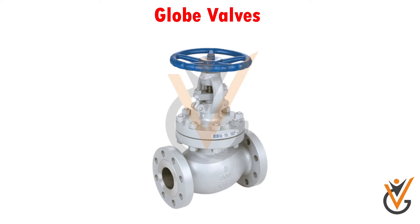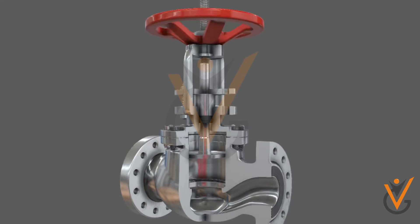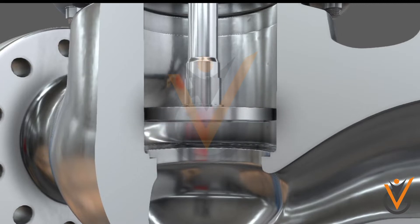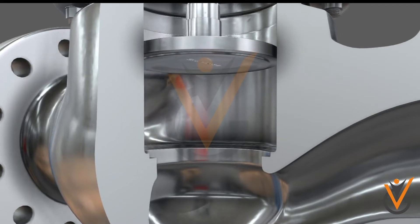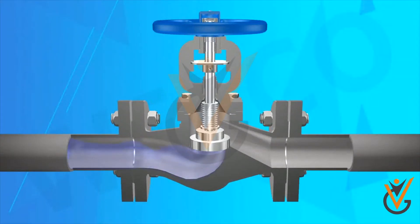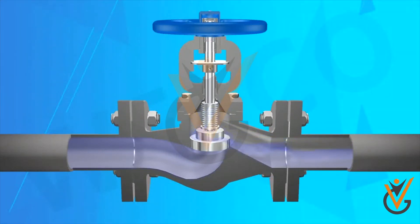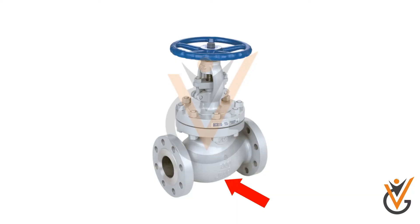Globe valve: used to vary flow accurately and where positive shutoff is required. It is the most common type of valve in the engine room, accommodation, and on deck for general applications of all fluids — oil, water, steam, and air. Available in screwed-down stop valve or screw-down non-return arrangement. A circular disc is lifted or lowered against a valve seat to allow or restrict the flow of fluid. The valve body is globe-shaped with provision of flanges for attachment to pipes.